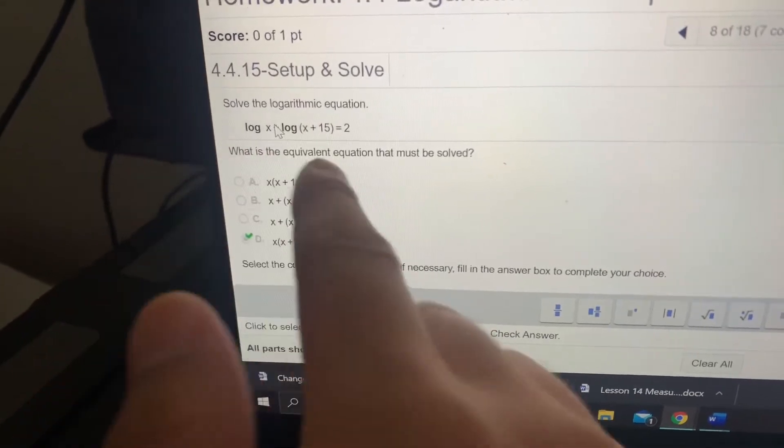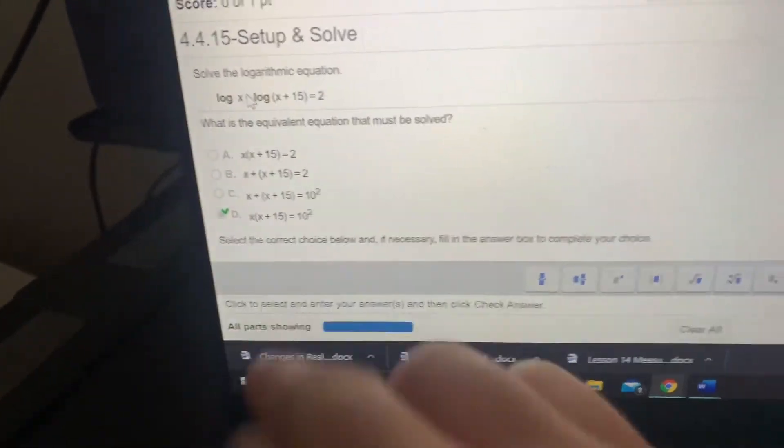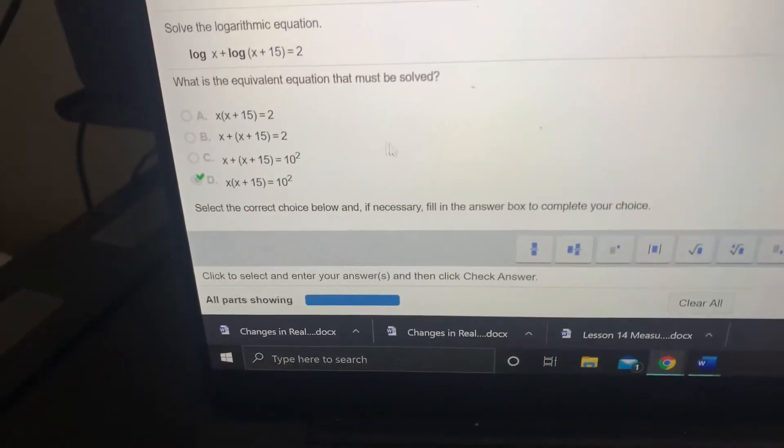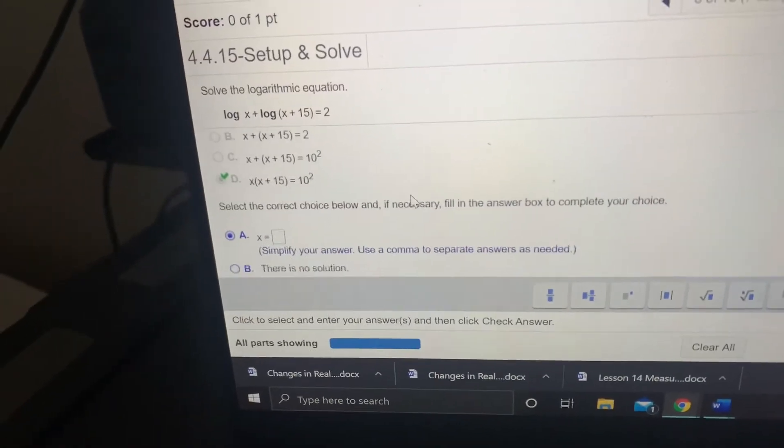That's because you're getting rid of the log, so it's going to be 10 squared, 10 to the power of 2. And then now, so it wants us to solve that equation.